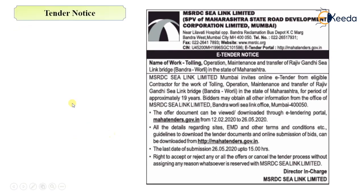Let me show you one of the examples or one of the formats of a tender notice. This is a format of tender notice in which a heading will be there. For example, this is an e-tender notice. MSRDC is the body or organization who has published this tender notice. The name of the work is tolling, operation, maintenance and transfer of Rajiv Gandhi's ceiling bridge in the state of Maharashtra. You can pause the video to read it and see this format.